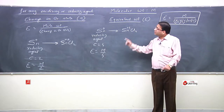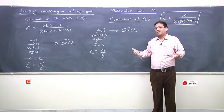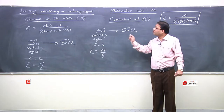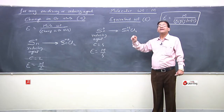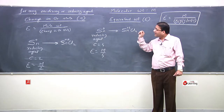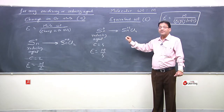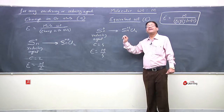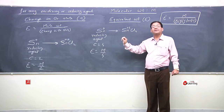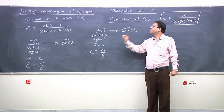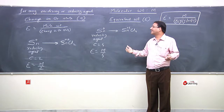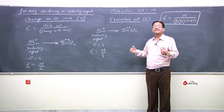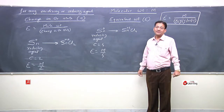The molecular weight of tin is the same in both reactions, but the equivalent weight is different. In both reactions, tin is a reducing agent, but the change in oxidation state is different — hence the equivalent weight is different.